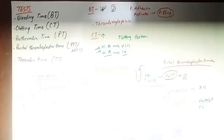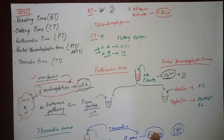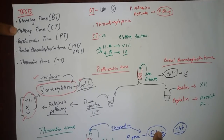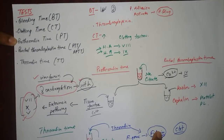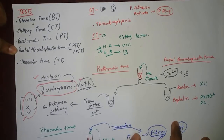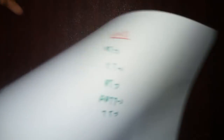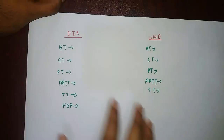Let's do a quick recap. Bleeding time is increased if there is a deficiency or abnormality in platelet formation. Clotting time increases when there is a deficiency of clotting factors. Prothrombin time increases when there is deficiency of factors that activate the extrinsic pathway. Partial thromboplastin time increases when there is deficiency of factors that activate the intrinsic pathway. And thrombin time increases when there is deficiency of fibrinogen.